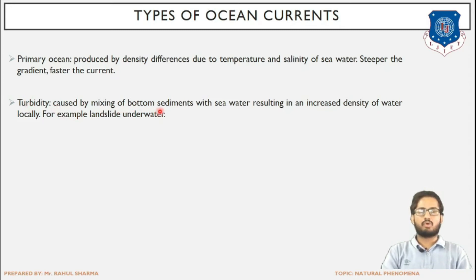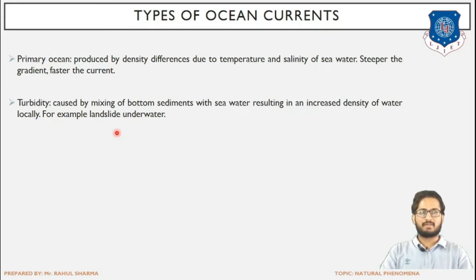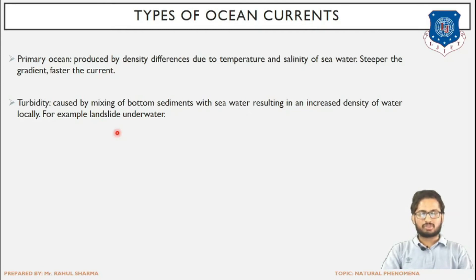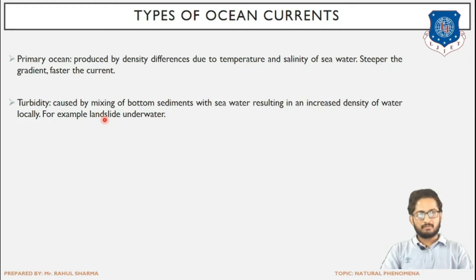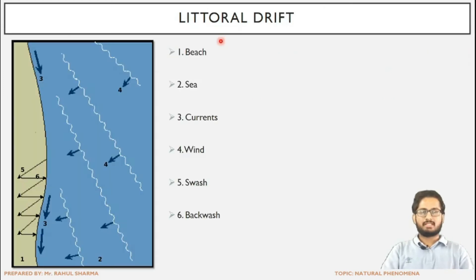Next is turbidity. Turbidity is the presence of sediments in water, caused by mixing of bottom sediments in sea water resulting in increased density of water. For example, if a landslide occurs at the sea bed, there will be a sudden increase in the concentration of sediments locally which is not present in surrounding areas. This creates an imbalance, generating a gradient to restore balance, and producing horizontal movement of water — a turbidity current.